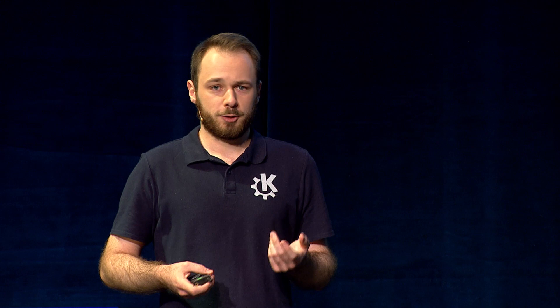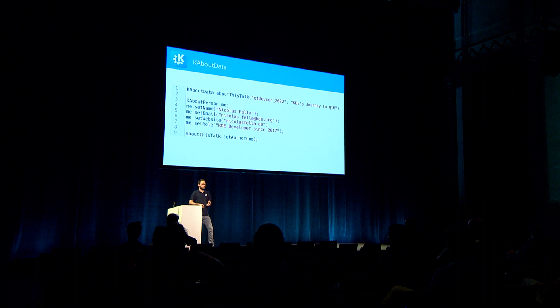A little bit about me. I'm Nico. I've been a KDE developer for about five years now, which from my perspective is quite a long time. There are probably people in this room who have been writing KDE software since before I was born. I've done a lot of things in KDE — mostly working on Plasma and various applications, but also on the foundational building blocks. I've also been contributing to Qt occasionally, and I'm one of the main people involved in getting KDE towards Qt 6.